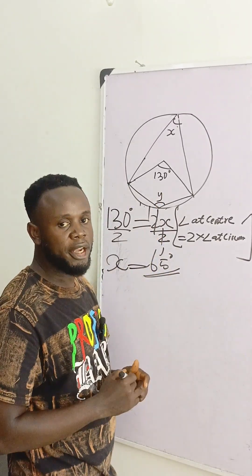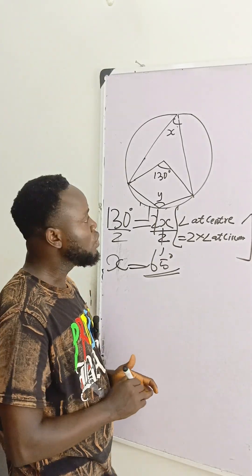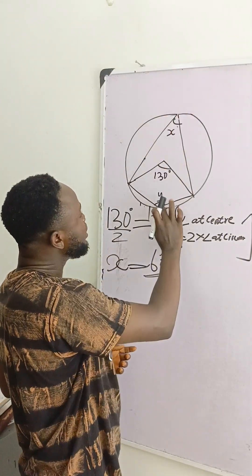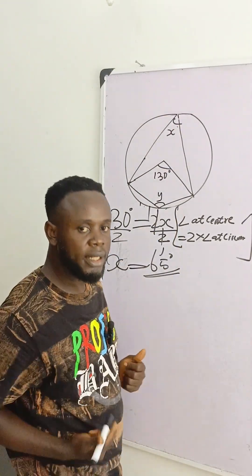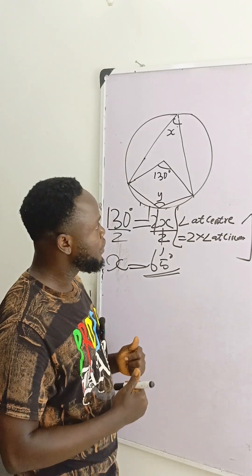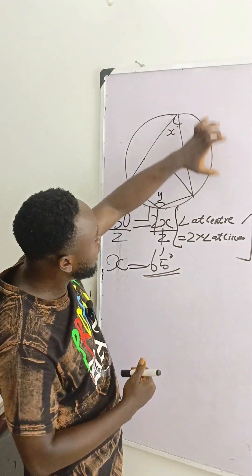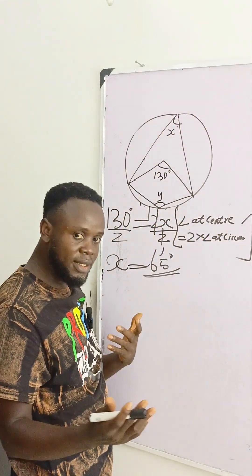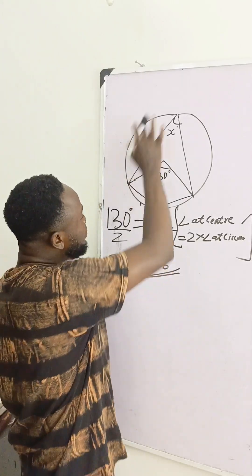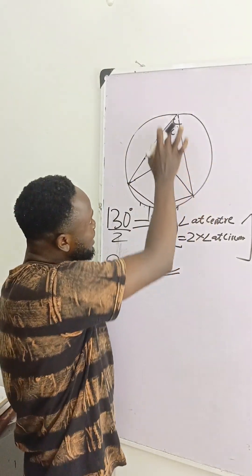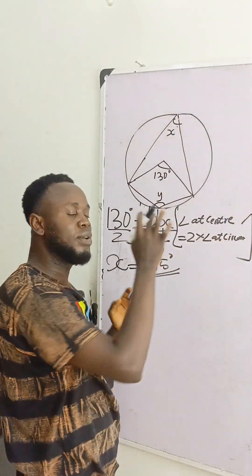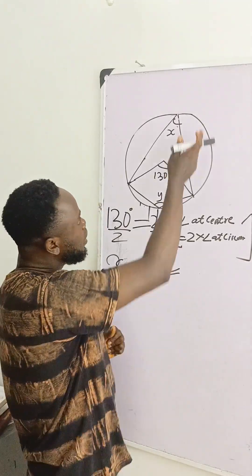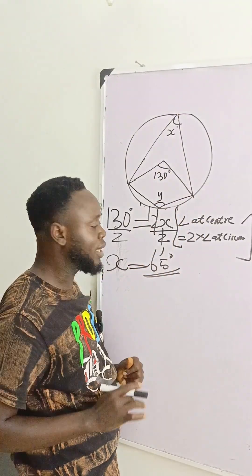Now we are looking for the value of y. You can see that these are opposite angles of a cyclic quadrilateral. This is a cyclic quadrilateral because it has four vertices, four sides, and each vertex is touching the circumference of the circle — and we call it a cyclic quadrilateral.